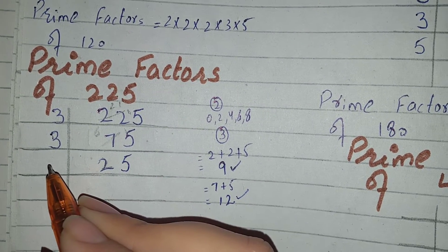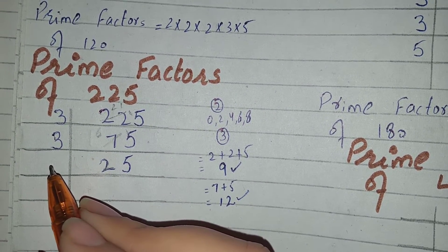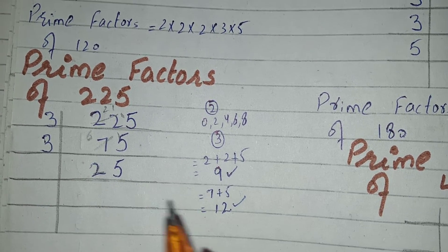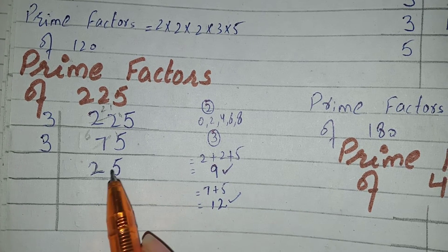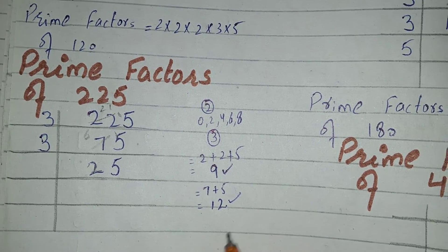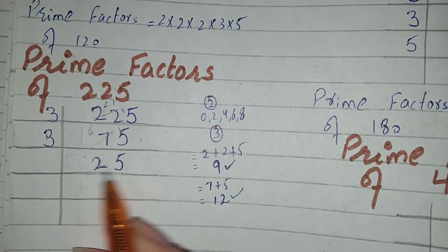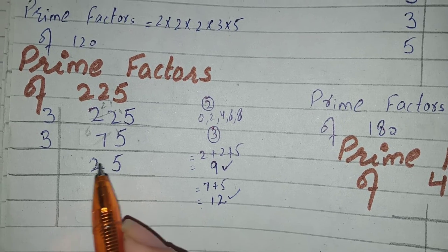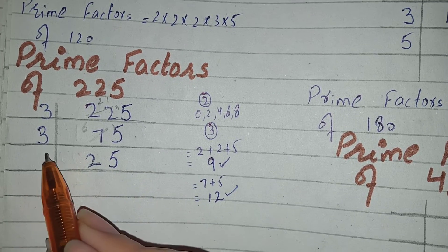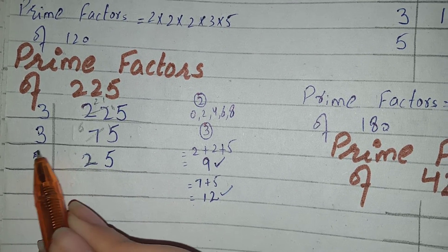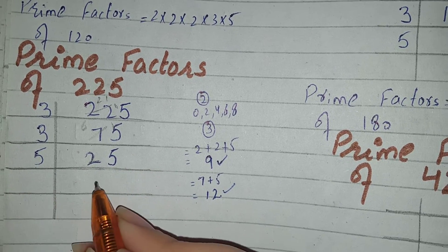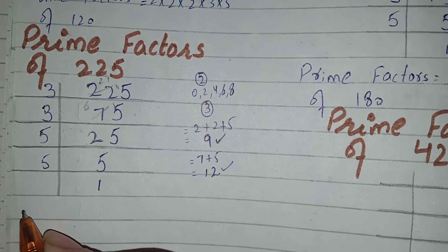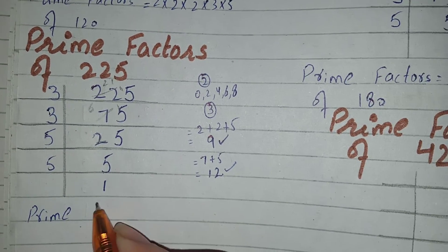Can we again take 3 here or not? We can't take 3 here because 25 is not divisible by 3. According to the rule, the sum of digits is 2 plus 5 equals 7, and 7 is not divisible by 3. Can we take 5 here? Yes, because 25 is divisible by 5. We will take 5 here. 5 fives are 25, and 5 ones are 5.